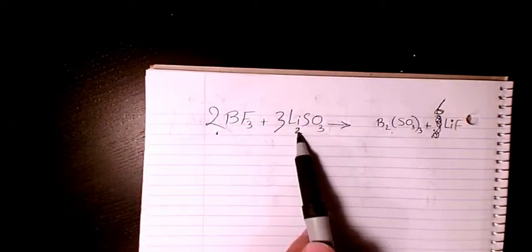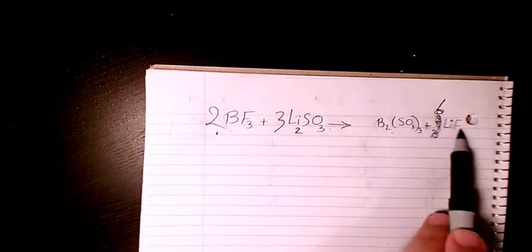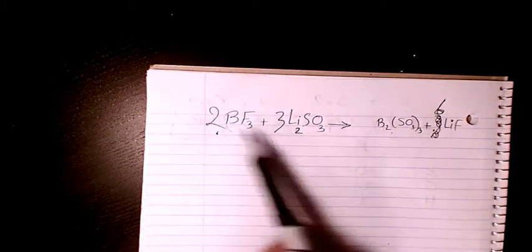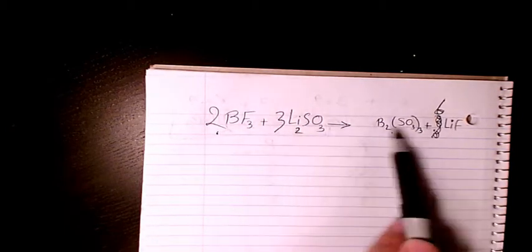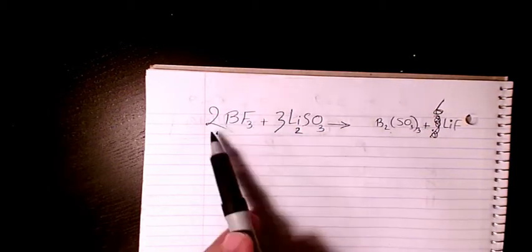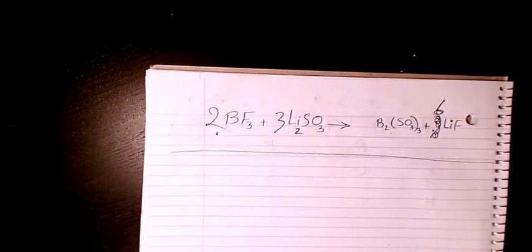All the elements: lithium is balanced, six; fluorine is balanced, six and six; SO3, we have three here, three here, and boron, we have two here and two here. So that's the balanced form of this equation.